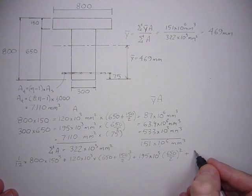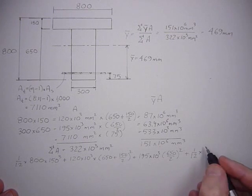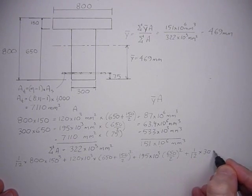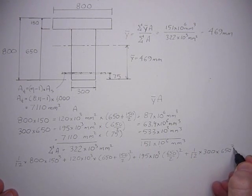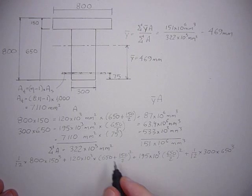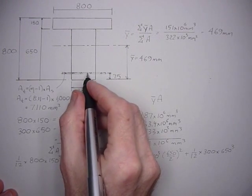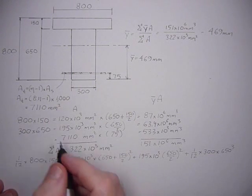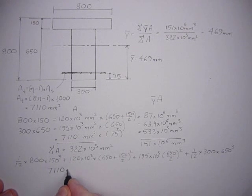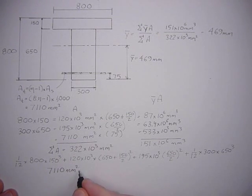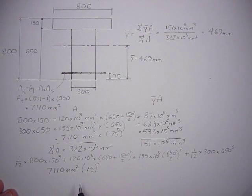The inertia of the steel is zero, so we'll just take the AD squared of the transformed steel: 7110 millimeters squared times 75 squared.